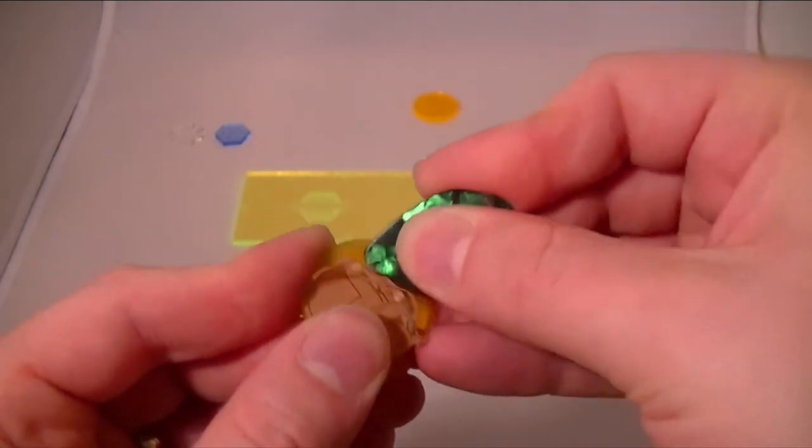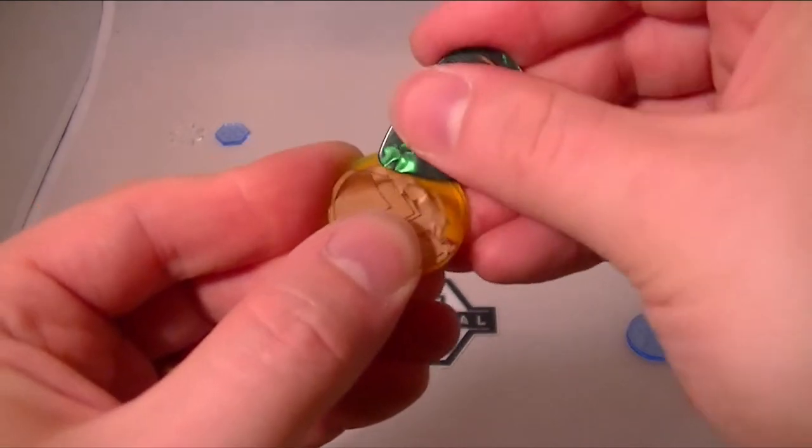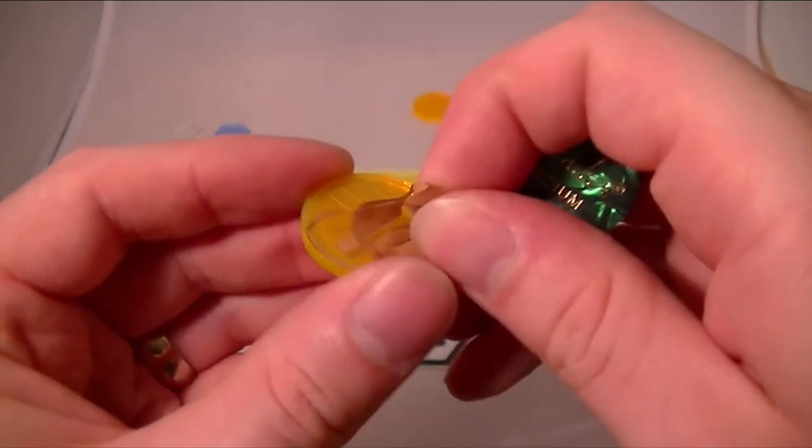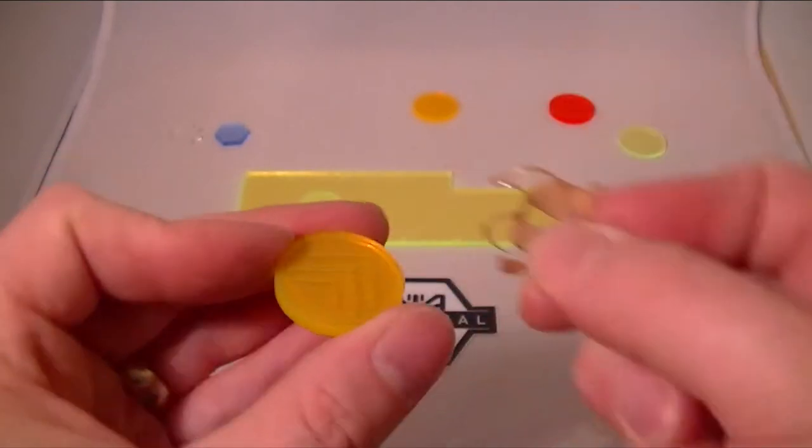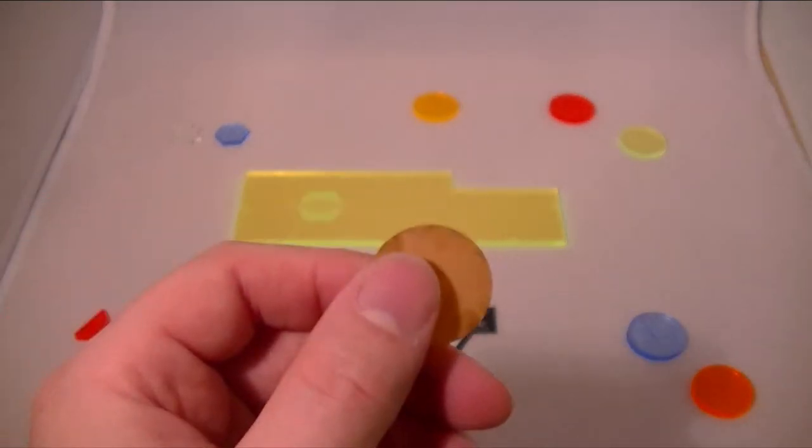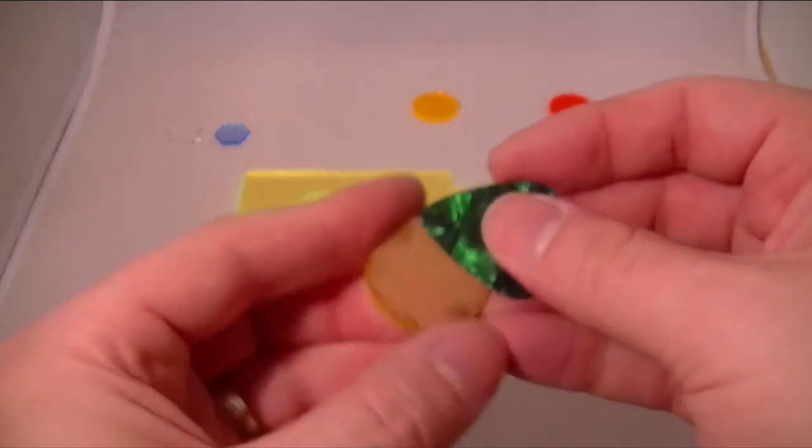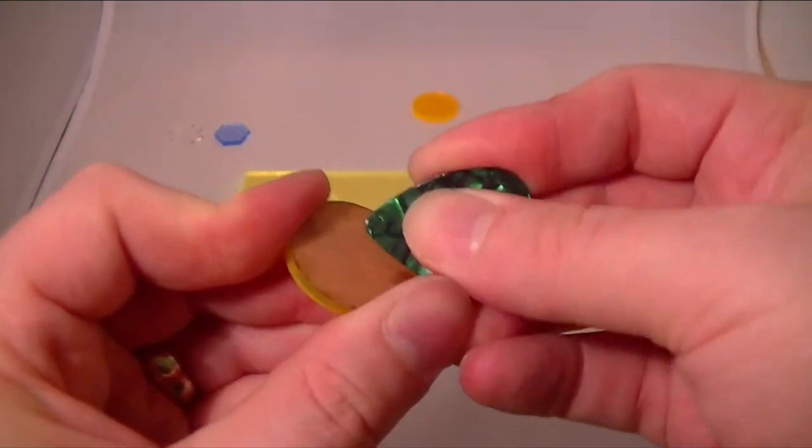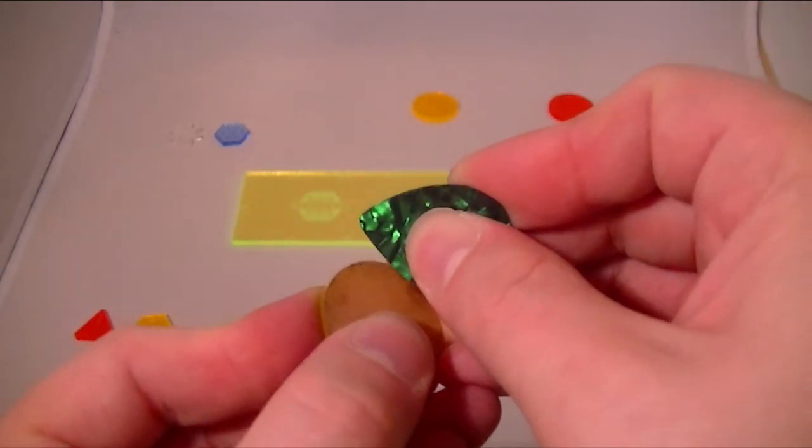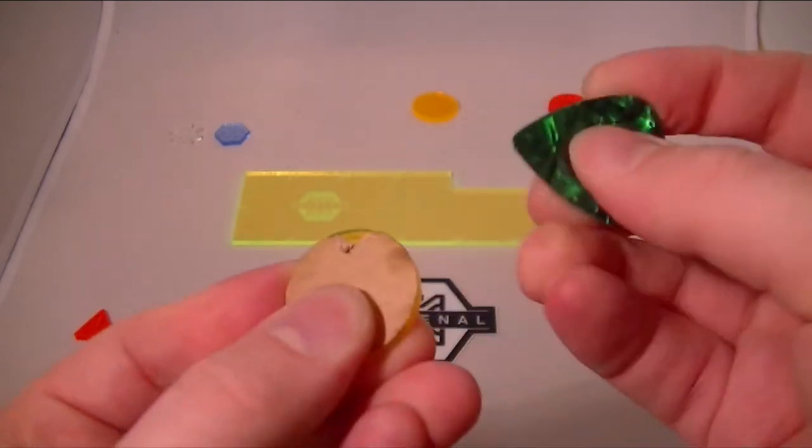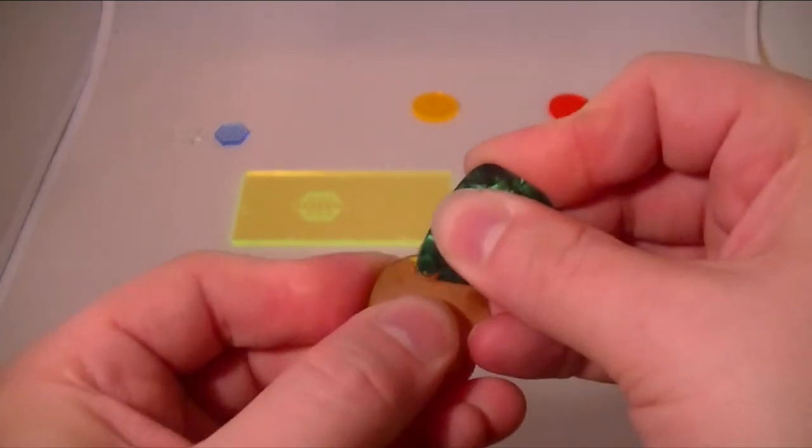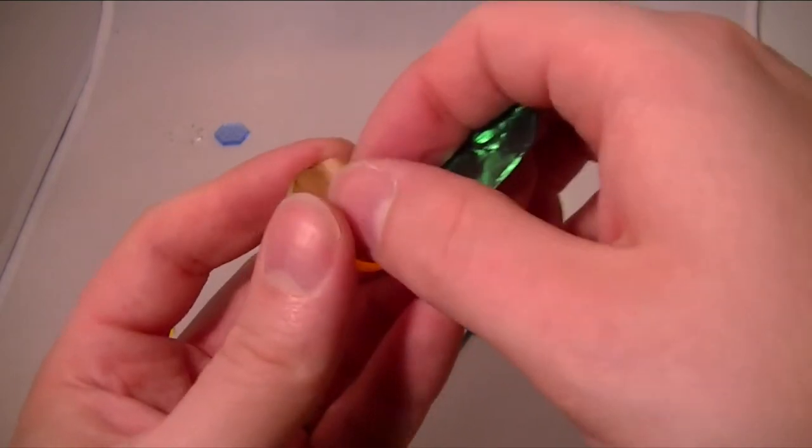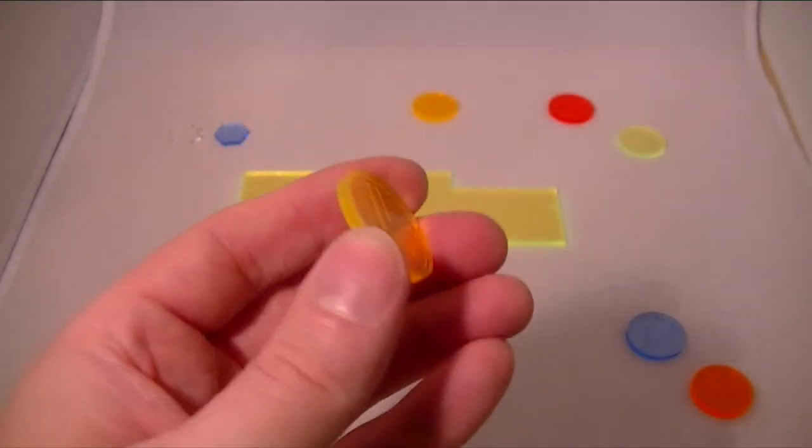For these round ones these are a little easier on the front than they are on the back. There we go. On the back just try and use the side to gouge out a little bit. There we go. And there we have that.